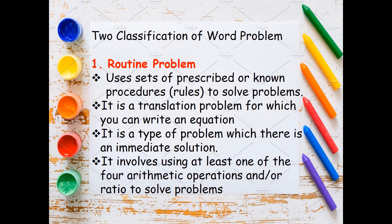There are two classifications of word problems. A routine problem uses sets of prescribed or known procedure rules to solve problems. It is a translation problem for which you can write an equation. It is a type of problem which has an immediate solution, and involves using at least one of the four arithmetic operations and/or ratio to solve problems.